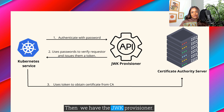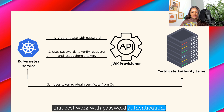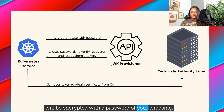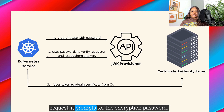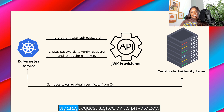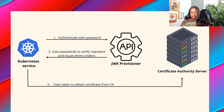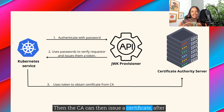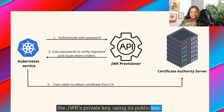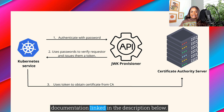Then we have the JWK provisioner. The JWK provisioner is ideal for workflows that best work with password authentication. Each JWK provisioner has a private key which will be encrypted with a password of your choosing. When a JWK provisioner receives a certificate request, it prompts for the encryption password. When the correct password is entered, the JWK provisioner issues a certificate signing request signed by its private key. Then the CA can issue a certificate after verifying that the request has been signed with the JWK's private key using its public key. For more information on choosing a provisioner for your desired use case, please see our provisioner documentation linked in the description below.